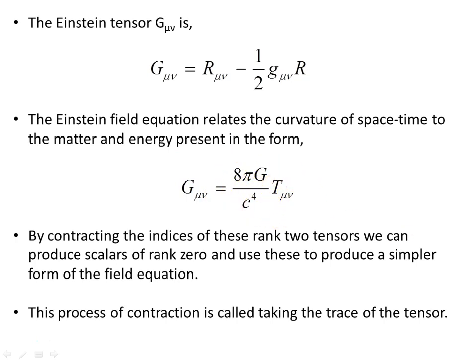Now by contracting the indices of these rank 2 tensors, we can produce scalars of rank 0, and use these to produce a simpler form of the field equation, or a more usable form. This process of contraction is called taking the trace of the tensor.